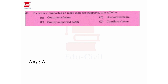If a beam is supported by more than two supports, it is a continuous beam. The types of beams are: continuous beam, encastrated, simply supported, and cantilever. A simply supported beam uses two supports. A cantilever is fixed at one end and free at the other.